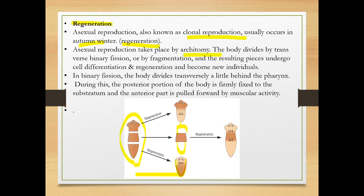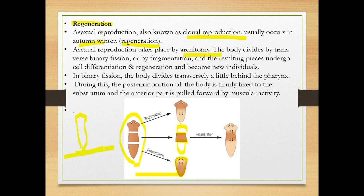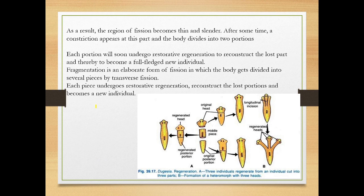Specialized cells for regeneration are present. This pattern of cells undergoes regeneration in a process of fragmentation and regeneration. The body divides transversely a little behind the pharynx. The posterior portion of the body is fixed firmly to the substrate, while the anterior part moves forward. As a result, the region of the pharynx becomes thin and slender. After some time, a constriction appears and the body divides.